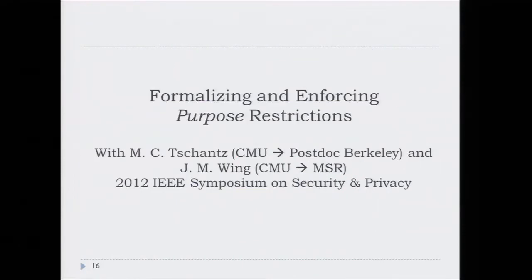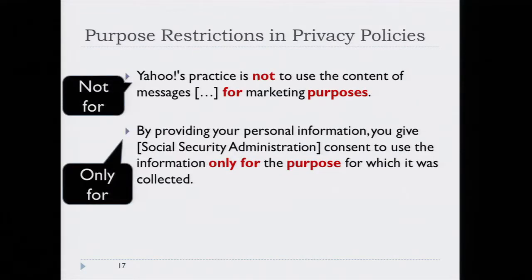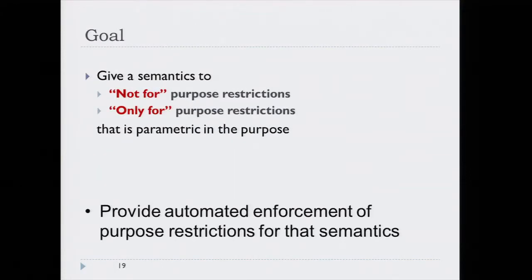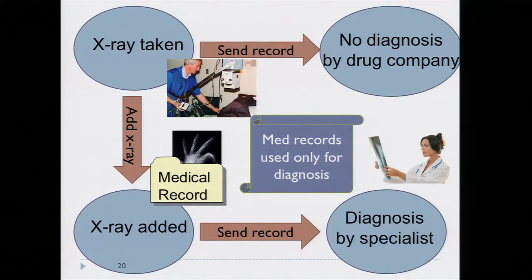Let me now transition to the second class of algorithm for dealing with purpose restrictions on information use. Here are two examples: Yahoo's practice is not to use the content of messages for marketing purposes, and the Social Security Administration says that you consent to allow them to use the information only for the purpose for which it was collected. These two classes of constraints — 'not for certain purposes' and 'only for certain purposes' — show up all over the place. Our goal is to give a semantics to these kinds of purpose restrictions that is parametric in the purpose, and to provide an algorithm for automated enforcement.